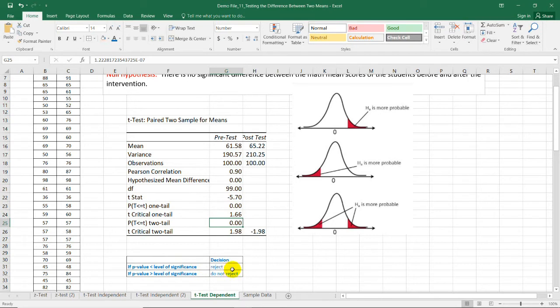The decision now is to reject the null hypothesis. We got the same results for the critical and p-value method, so we really need to reject the null hypothesis.